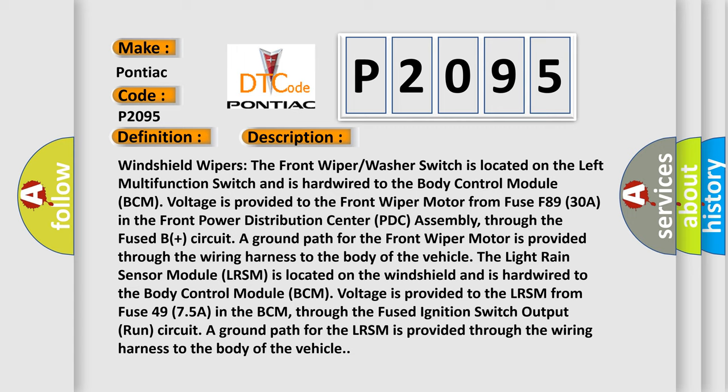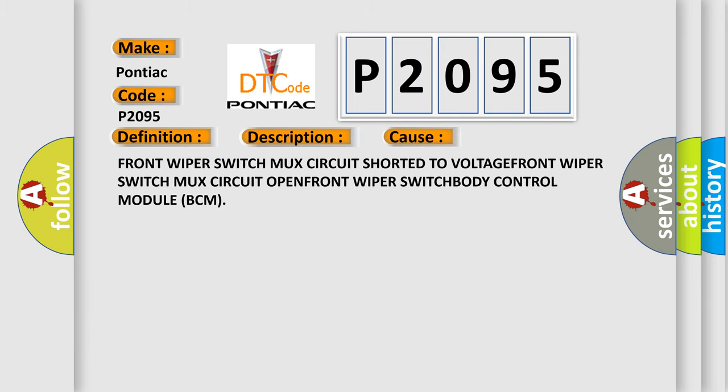PDC assembly through the fused B plus circuit. A ground path for the front wiper motor is provided through the wiring harness to the body of the vehicle. This diagnostic error occurs most often in these cases: front wiper switch mux circuit short to voltage, front wiper switch mux circuit open, front wiper switch failure, or body control module BCM failure.